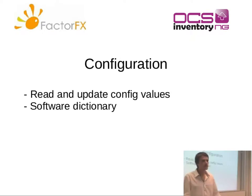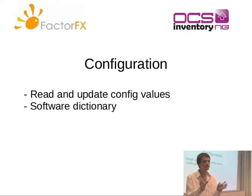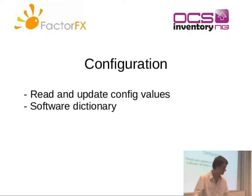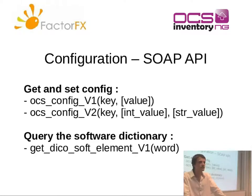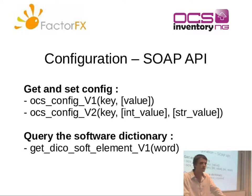You can also query the OCS configuration — get and set values — and query the information you put in the software dictionary, which is a kind of mapping to give a specific name to a software. The V1 and V2 versions exist here too because of an upgrade in OCS: at first, configurations were only integer values, but then string values were added — like paths to log files. So a second method was added where you can specify which value you want and update either an integer or a string value.